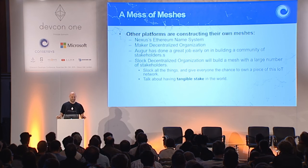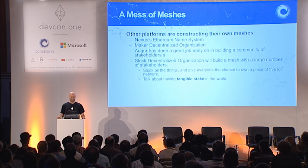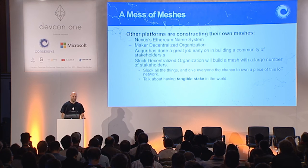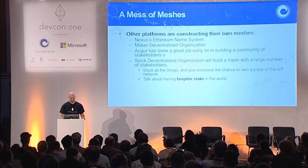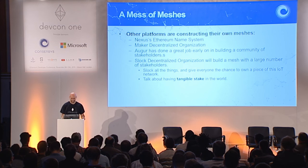Other platforms that you've heard about at this conference are constructing their own meshes. Nex sounds like they're putting together a decentralized organization for their Ethereum Name System. Maker will be a decentralized organization. Augur has done a great job building a decentralized organization. Slock will do a great job building a decentralized organization.